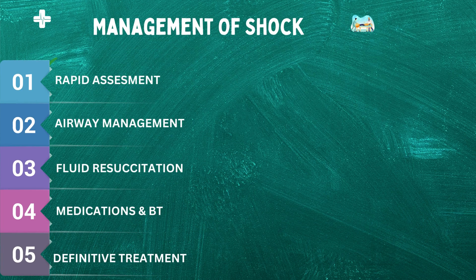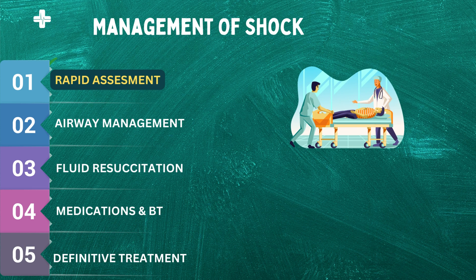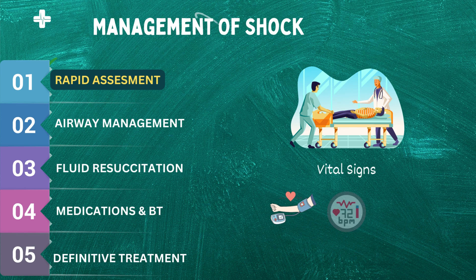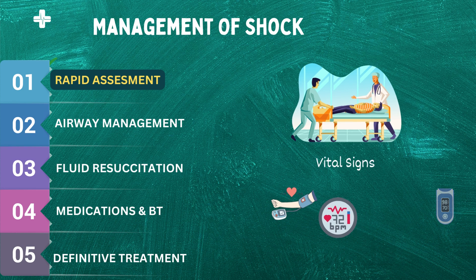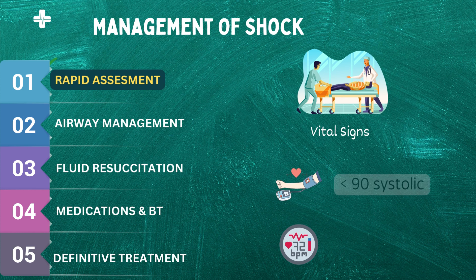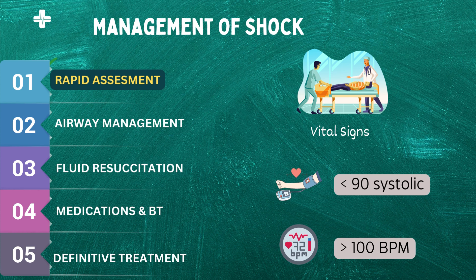Let's start with the assessment of shock in the emergency room. When a patient arrives, the first step is to assess the patient's vital signs, including blood pressure, heart rate, respiratory rate, and oxygen saturation. These vital signs provide important clues about the patient's condition. Healthcare professionals will also ask the patient about their symptoms and medical history. Patients typically present with low blood pressure, normally below 90 systolic, and tachycardia with a heart rate of more than 100 per minute.